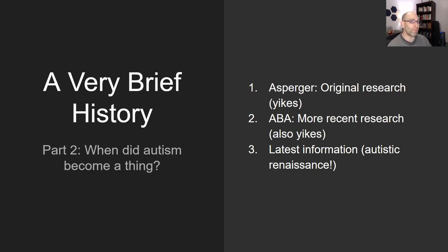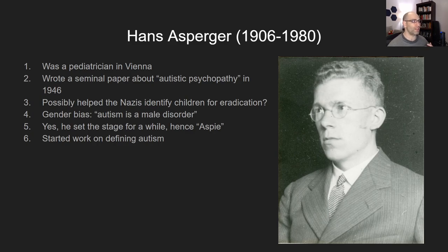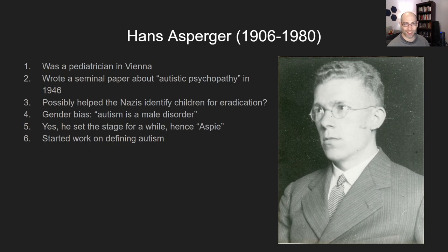Part two: let's do a very brief history of autism. A lot of this information comes from the book Neurotribes. The reason I want to share this is because the context is really helpful — this is all brand new stuff. First, there is Hans Asperger, a pediatrician in Vienna, who in 1946 wrote a seminal paper about autistic psychopathy — not a very nice name, but he was doing the best he could. He worked with the Nazis, which is very controversial, so take everything from Asperger with a grain of salt — but he did set the stage and started the conversation.